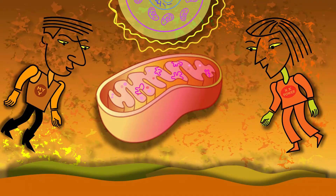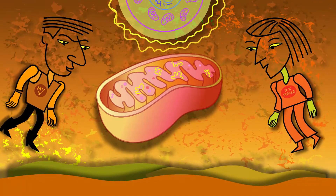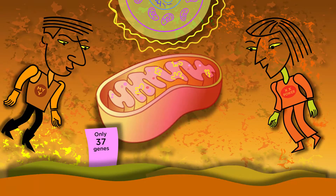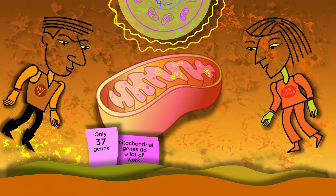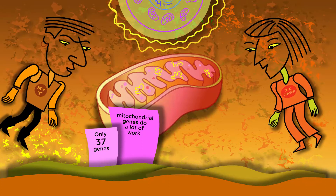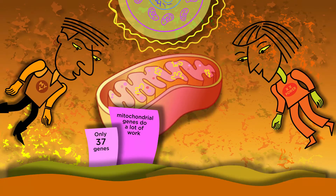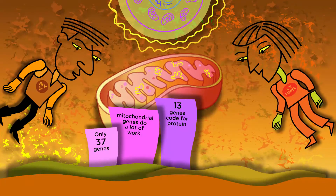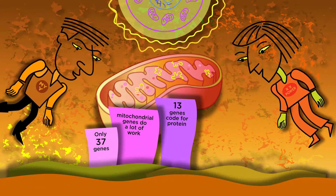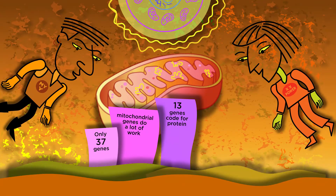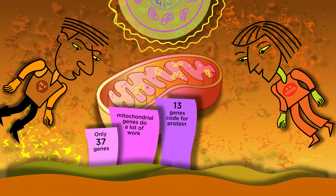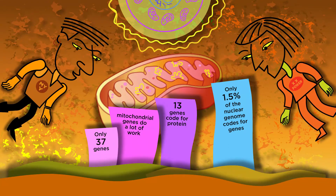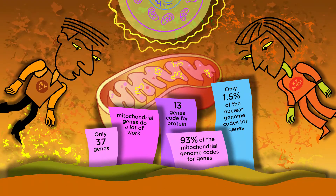See the DNA molecules here and here? Each one has only 37 genes — but every gene counts, for all have important functions. Like the 13 genes coding for protein to make energy for the cell.